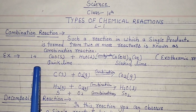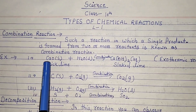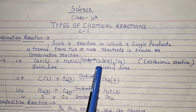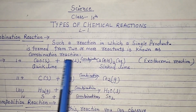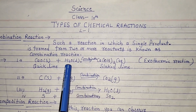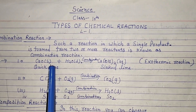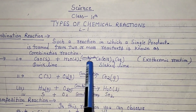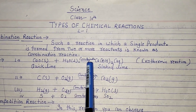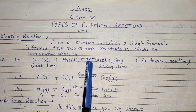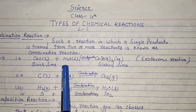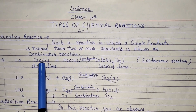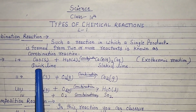For example: calcium oxide plus water gives calcium hydroxide. Two reactants combine and create a single product — that is a combination reaction. Let's observe this: we take calcium oxide (quicklime) and water and mix them in a beaker.